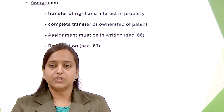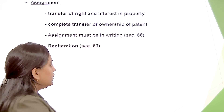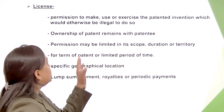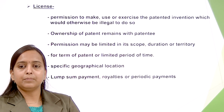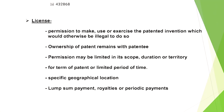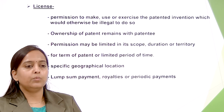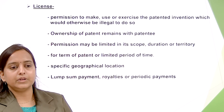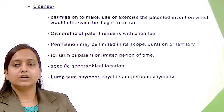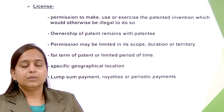The third way is that the patentee may grant a license. A license is a permission to make, use, or exercise the patented invention, which would otherwise be illegal to do so. In a license, the ownership remains with the patentee only — only partial use is permitted. Permission may be limited in its scope, duration, or territory. It may be granted for the full term of the patent or for a limited duration of time, and it may be restricted to a specific geographical location.